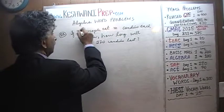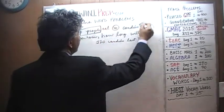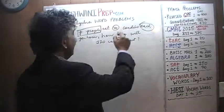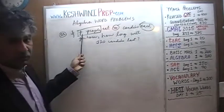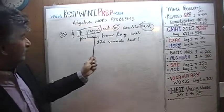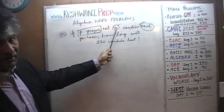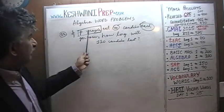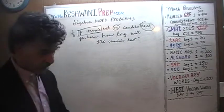So P people eat M candies each per hour. For example, if we have 3 people eating 2 candies each, then they are eating 6 candies per hour. If we have 10 people and each one of them is eating 5 candies, then 5 times 10 people they will be eating 50 candies per hour. So P people eating M candies per hour — how much are they eating each hour? Let's find out.